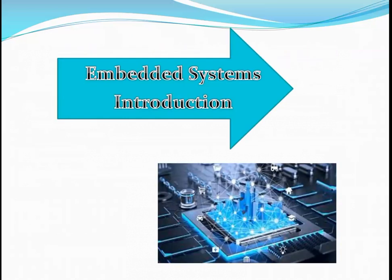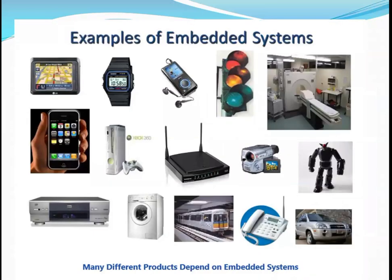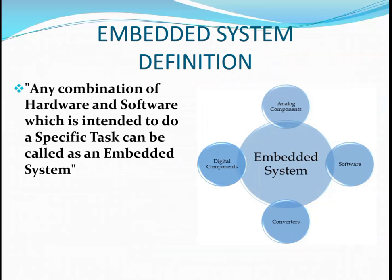My teammate Akash Raj will explain embedded systems. An embedded system is a combination of hardware and software intended to perform a task in a specific manner. It is a processing system having analog components, digital components, and software. A converter is also part of this embedded system to convert software instructions to hardware actions.